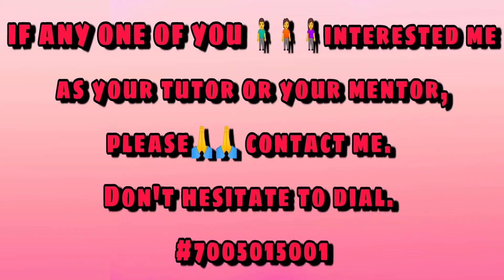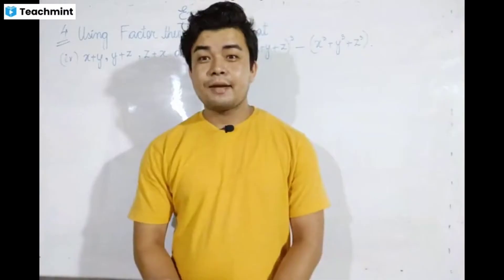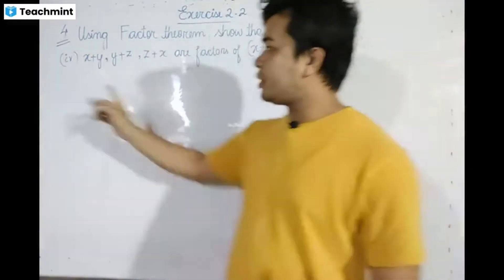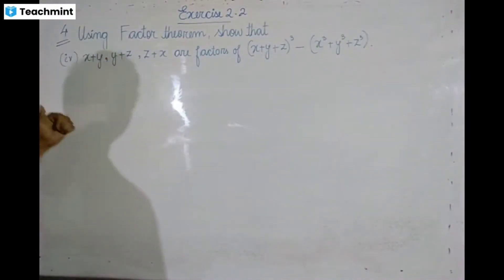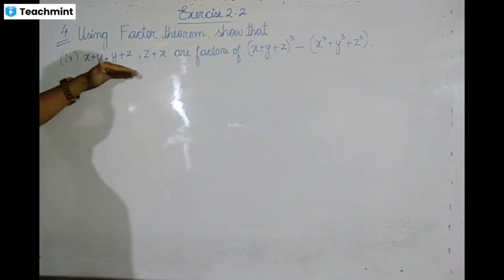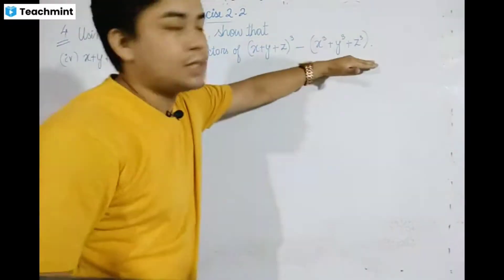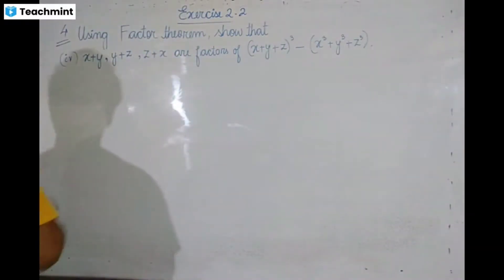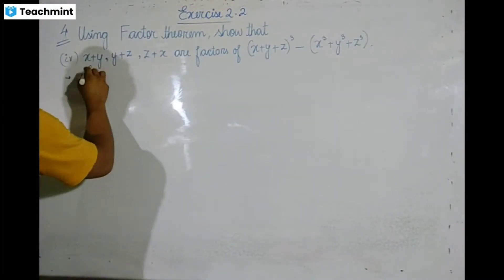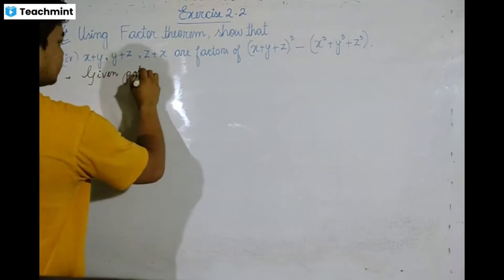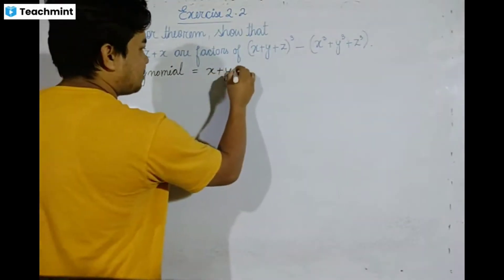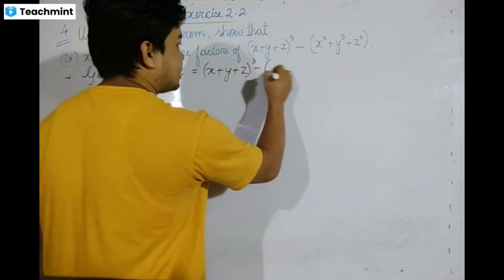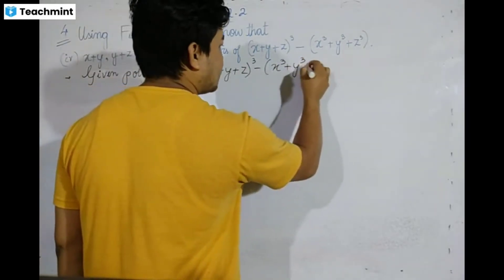We are going to talk about exercise 2.2, the 4th exercise. We need to factorize a given polynomial using the factor theorem. The given polynomial is: x plus y plus z, whole cube, minus x cube plus y cube plus z cube.